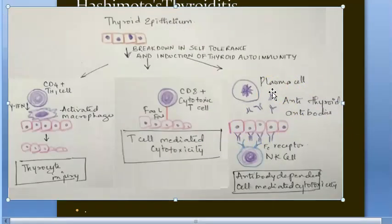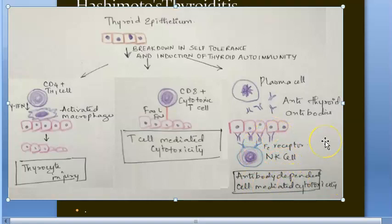The plasma cell — which is essentially the B cell — releases a large number of autoantibodies that attack the thyroid tissue. This reflects the third principal feature: presence of thyroid autoantibodies. Natural killer cells also participate through antibody-dependent cell-mediated cytotoxicity.